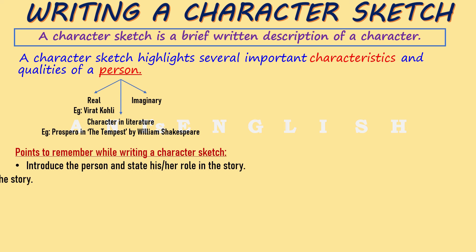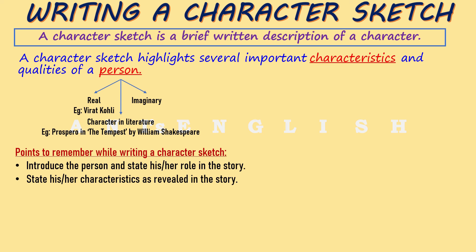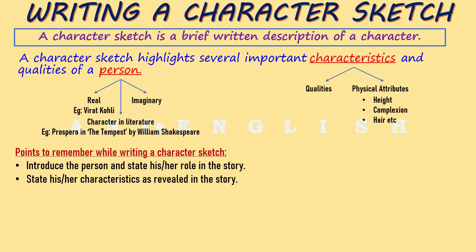The second point is to highlight the characteristics of that person as revealed in the story. Characteristics can include both physical attributes — like height, build, and complexion — as well as personal qualities such as whether the person is introvert, extrovert, cheerful, or calm. Whenever you write about one character trait, you need to give an example from the story to support your statement.